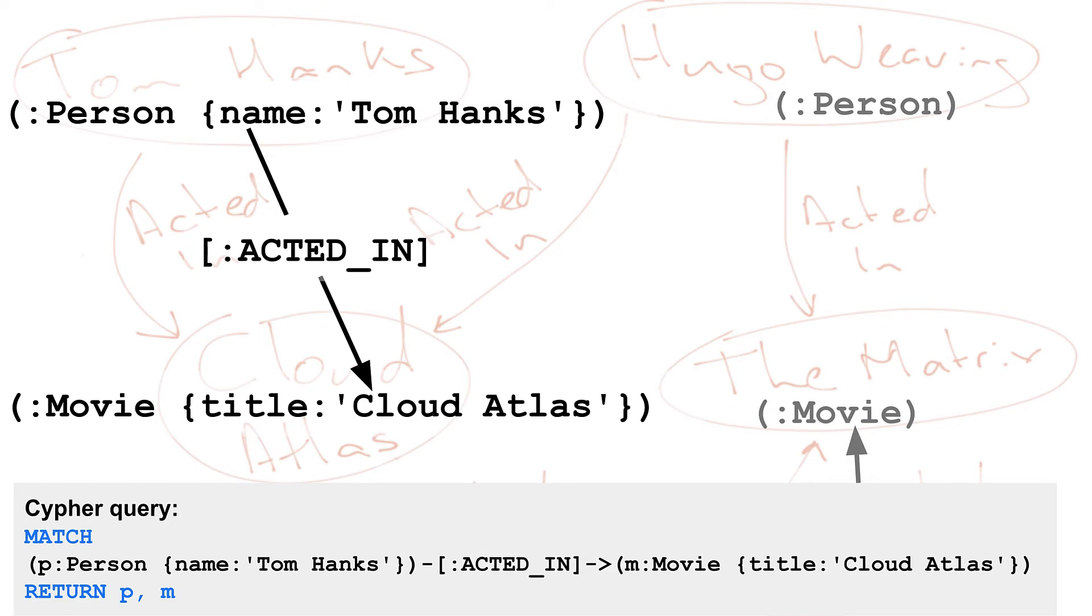What the query processor does is first find the person node that satisfies the criteria, then it traverses the acted in relationships from the Tom Hanks node and filters the movie nodes found to retrieve the Cloud Atlas movie node. The role of the match clause is to find the pattern in the graph where it anchors the query on a particular node or set of nodes.